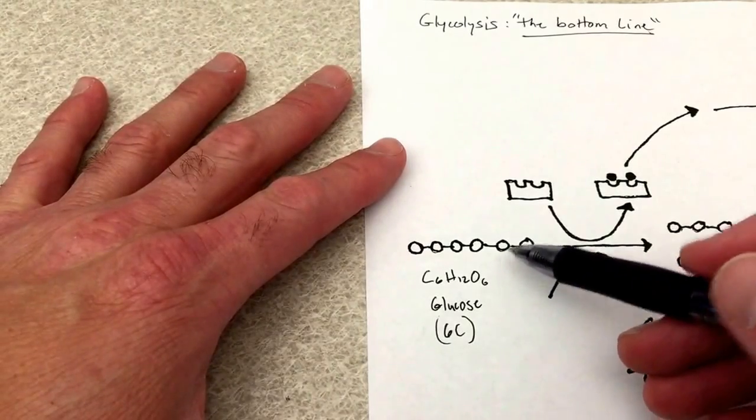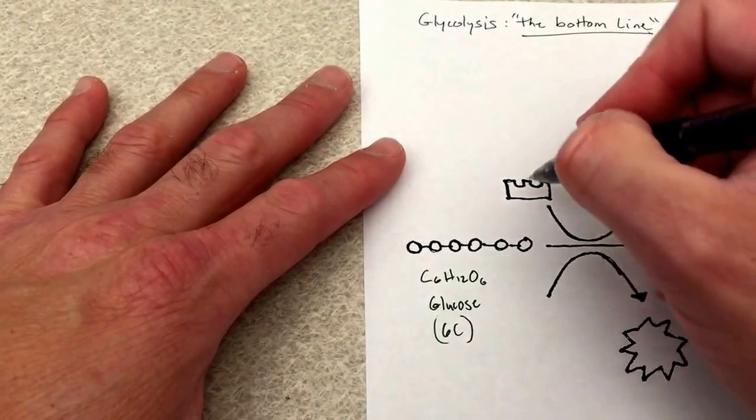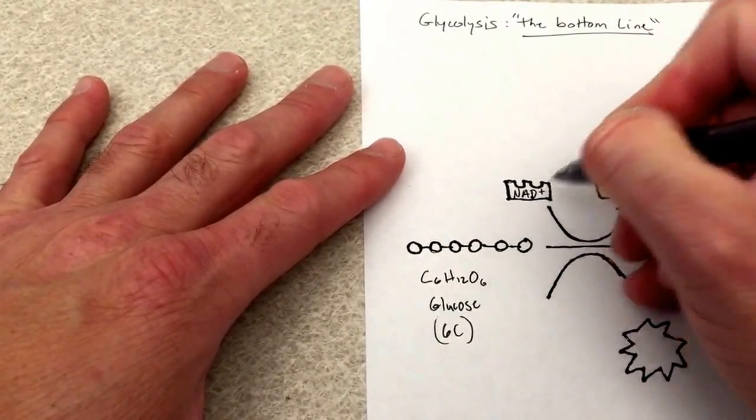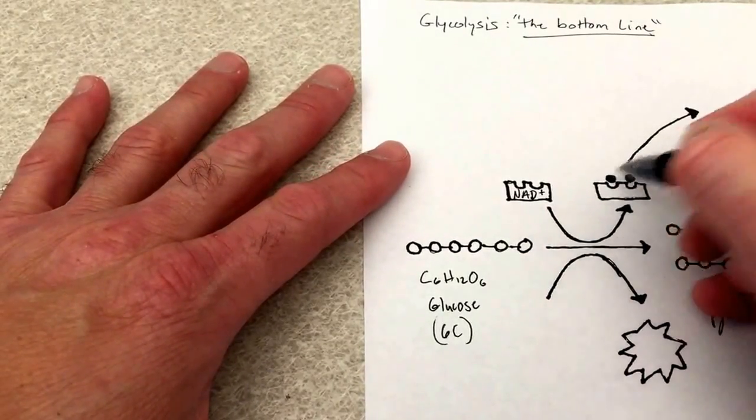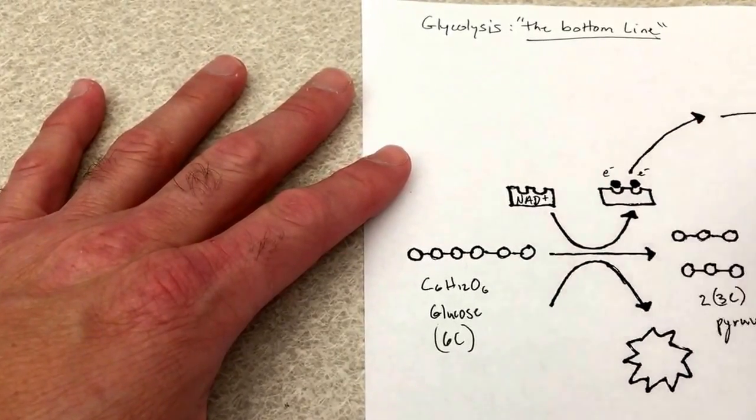So where do these electrons go? Well, they get loaded onto an electron carrier molecule. And this molecule here, I'm going to label NAD+. And these little black balls right here, those are the electrons.